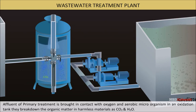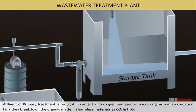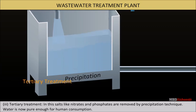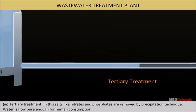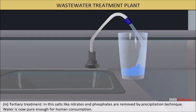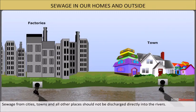The aerobic microorganisms break down the organic matter into harmless materials such as CO2 and H2O. Further chlorination is done to kill the bacteria. Advanced waste management or tertiary treatment: in this step, salts like nitrates and phosphates are removed by precipitation technique. Water is now pure enough for human consumption.